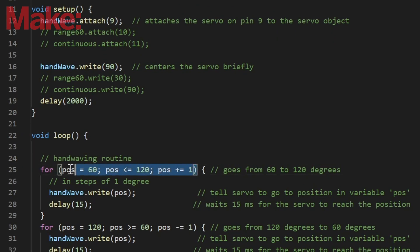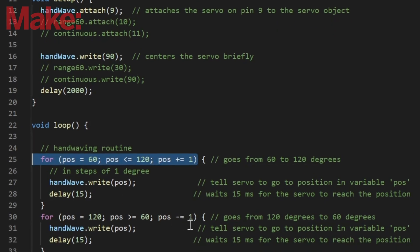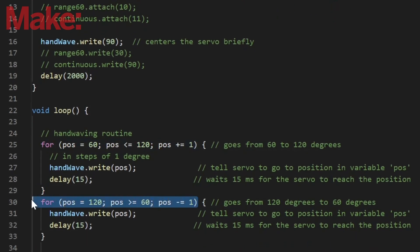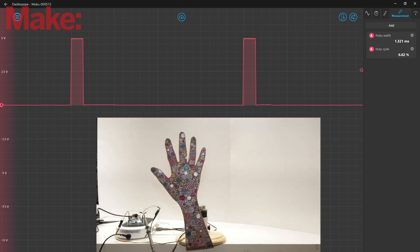We'll create a loop that goes from 60 to 120 degrees and back, which causes the servo library to create a PWM with a pulse width that varies from roughly 1.2 to 1.8 milliseconds. And this causes our hand to wave.